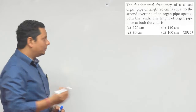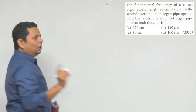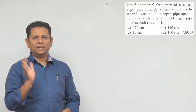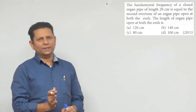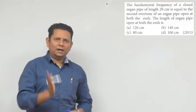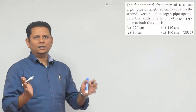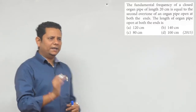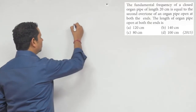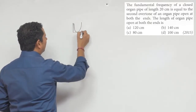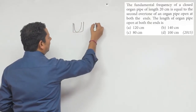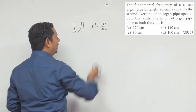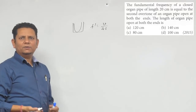When we talk about a closed organ pipe, it means that one end is open and one end is closed. So when we say this is your organ pipe which is closed at one end, then the fundamental frequency is V divided by 4L. This is your fundamental frequency for a closed organ pipe.